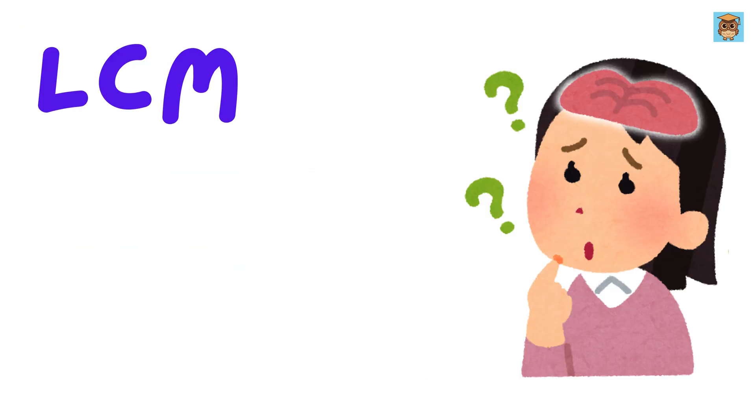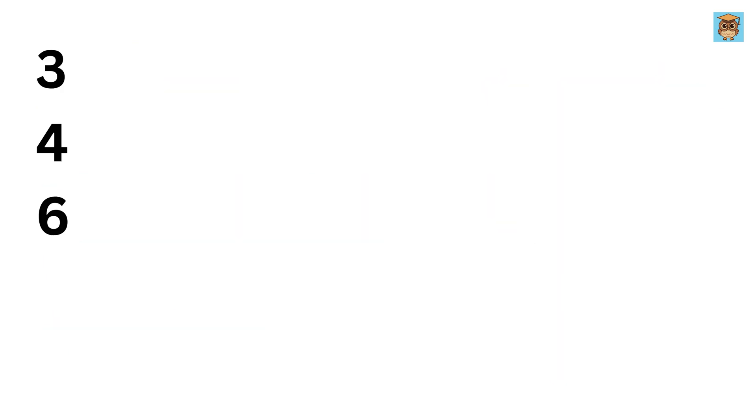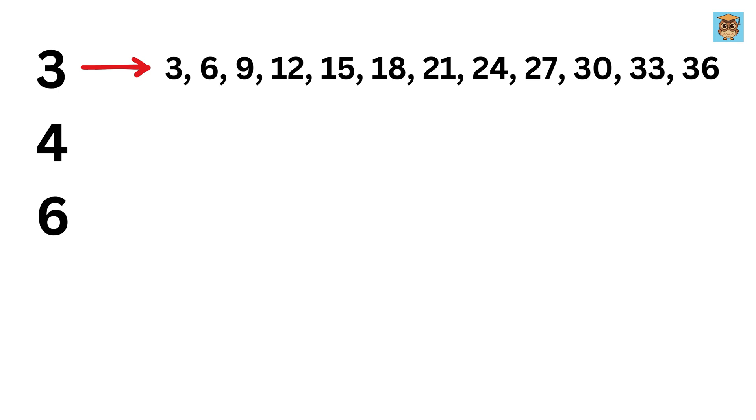Now, for those who don't know what LCM is, remember its full form is least or lowest common multiple, which will make us understand it better. Suppose we have three numbers, 3, 4, and 6. First, write the table of 3 like this: 3, 6, 9, 12, and so on. Then, write a table of 4 like this: 4, 8, 12, 16, and so on.